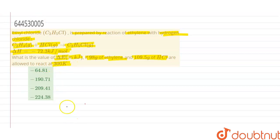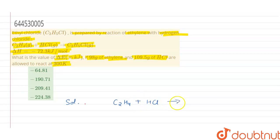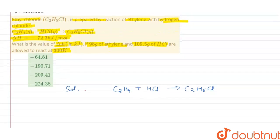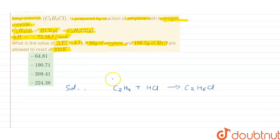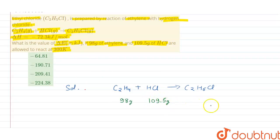Let's solve the given question. First, let's write the reaction: C2H4 + HCl → C2H5Cl. We are given the weight of both ethylene and HCl — 98 grams of ethylene and 109.5 grams of HCl.